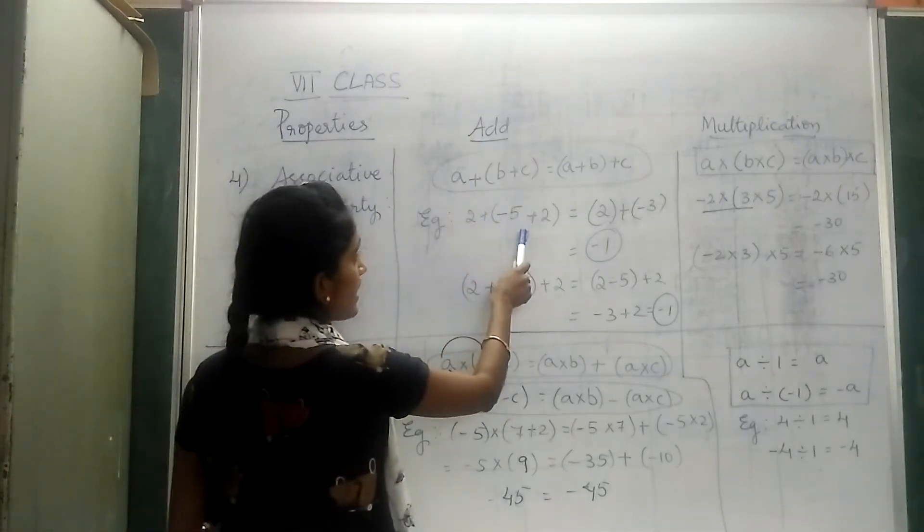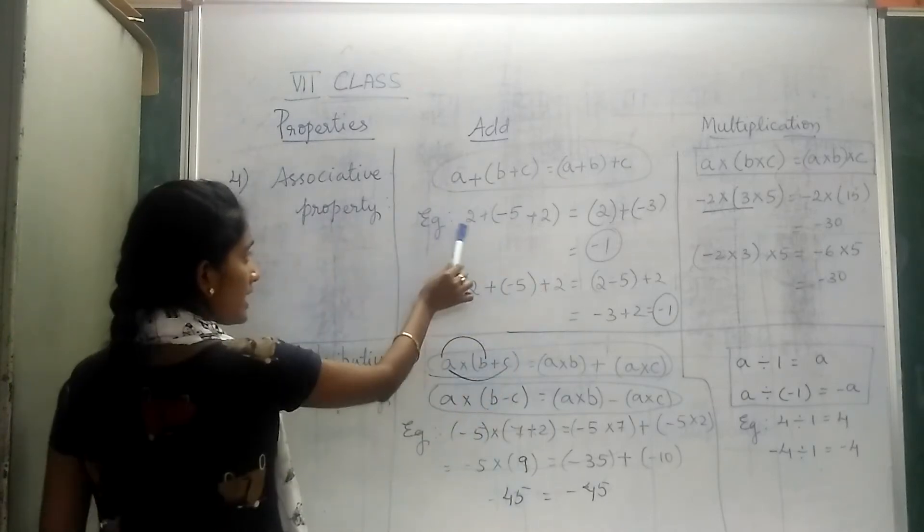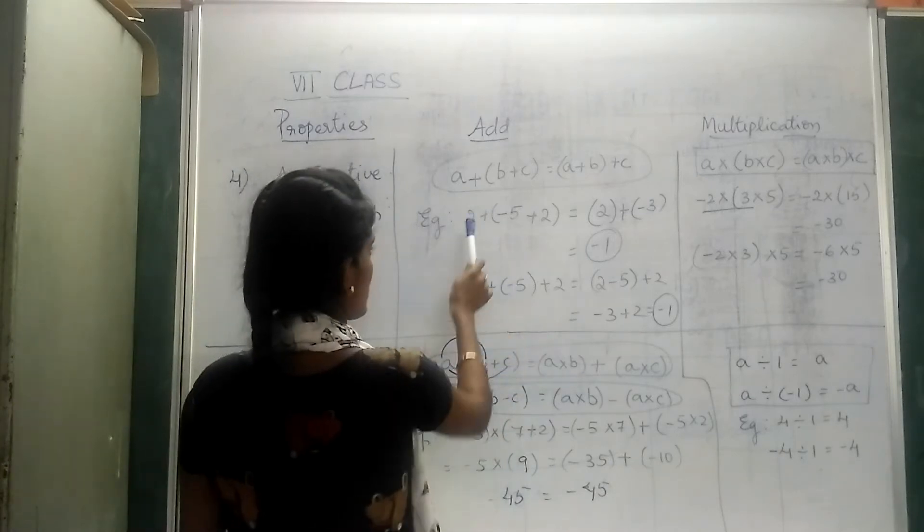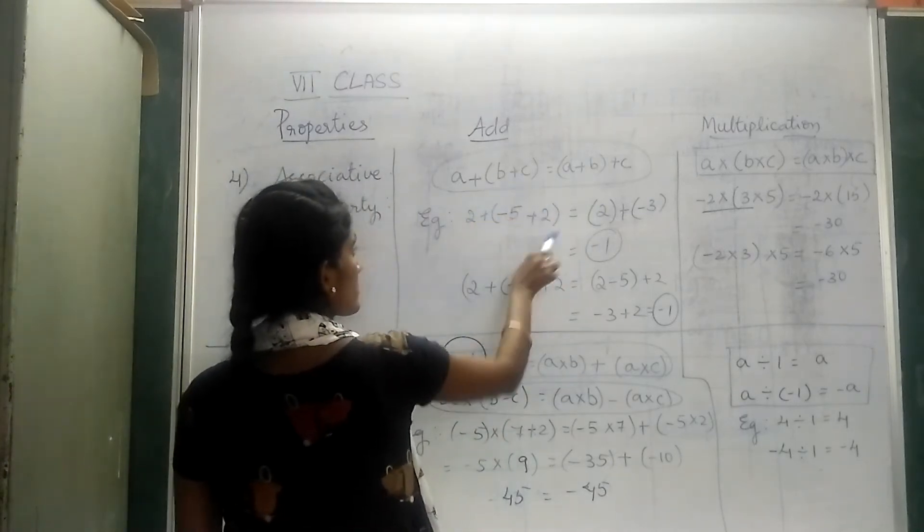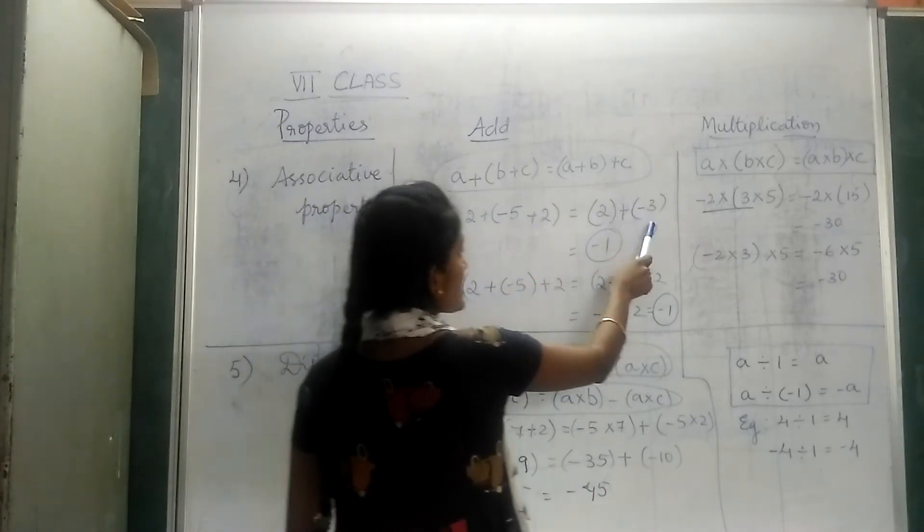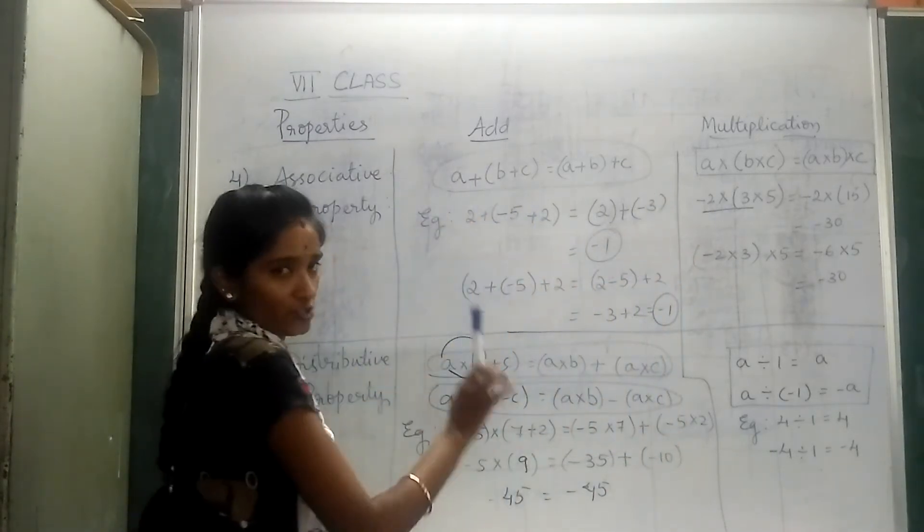So, 2 + (-5) + 2. I have taken this as a, this is b, and this is c. Let's solve it. First, what is in the bracket we will solve. This is -5 + 2.